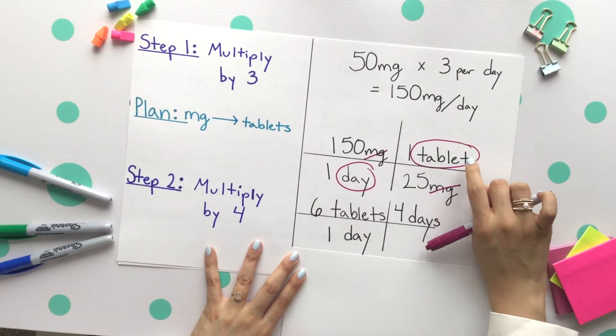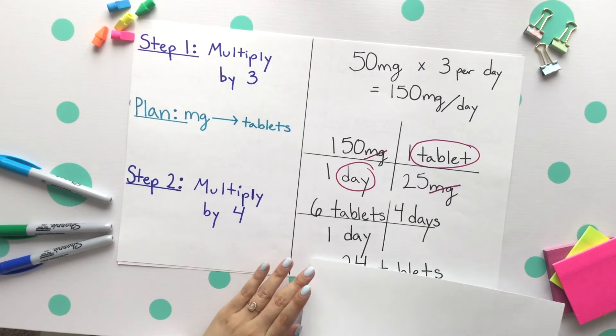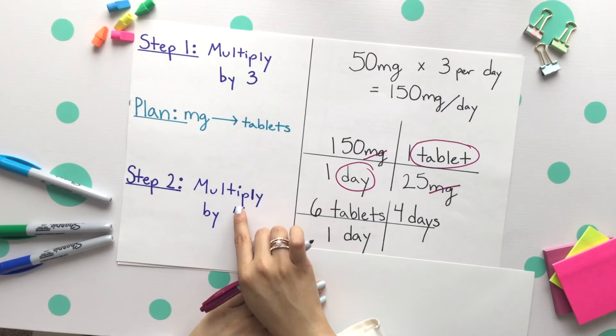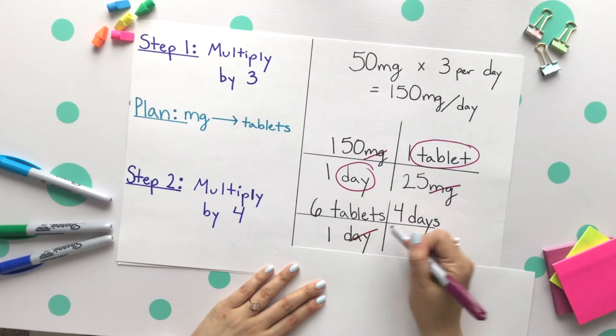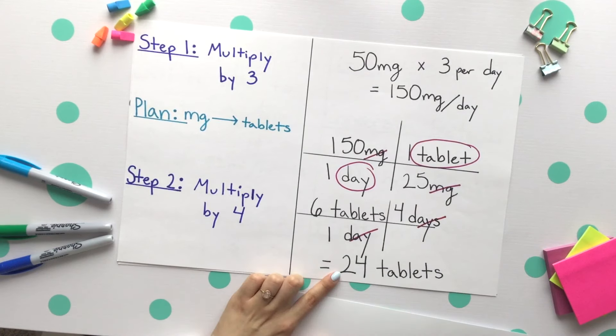We got that here with our tablets per every day. The last step is then to multiply by four using the six tablets per every day. We'll cancel out our days, putting them across from one another. Six times four then gives us 24 tablets.